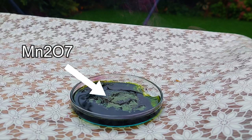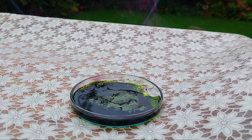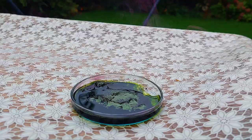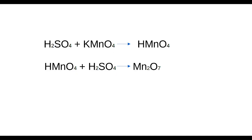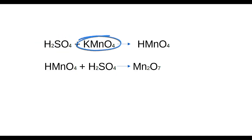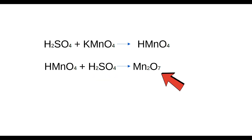The green oil that you see on the top is manganese heptoxide. Let's talk a little about its formation. Sulfuric acid reacts with the permanganate to make permanganic acid. This acid is then dehydrated by sulfuric acid to produce our permanganic anhydride, or manganese heptoxide.